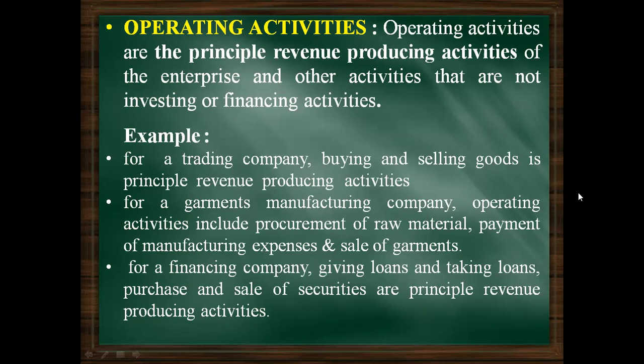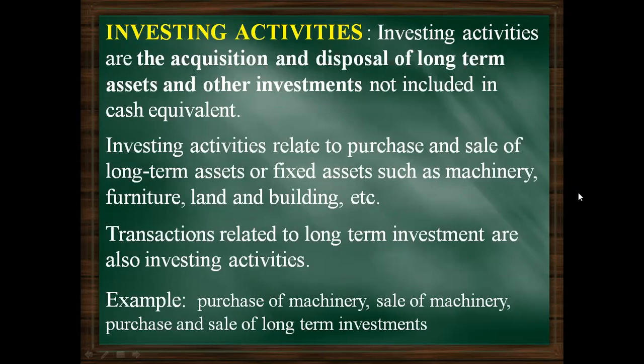The second activity is investing activity. Investing activities are the acquisition and disposal — that is, purchase and sale — of long-term assets and other investments not included in cash equivalents. Cash equivalents include short-term investments, but here we consider only long-term investments. Investing activities relate to purchase and sale of fixed assets like machinery, furniture, land and building.